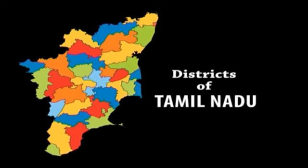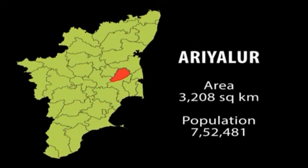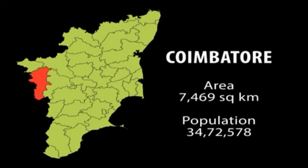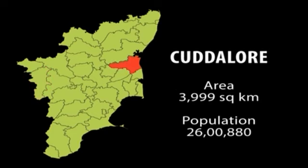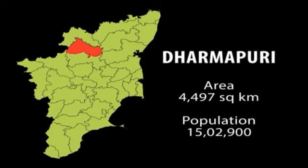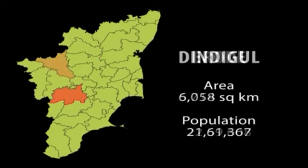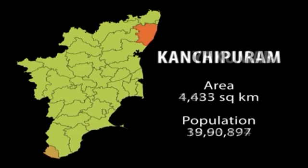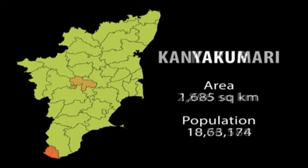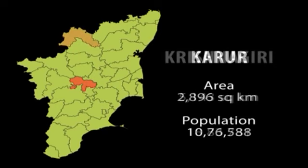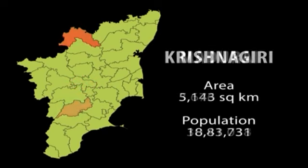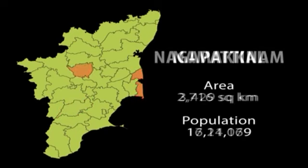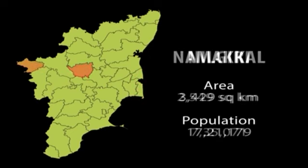The districts of the state include Ariyalur, Chennai, Coimbatore, Cuddalore, Dharmapuri, Dindigul, Erode, Kanchipuram, Kanyakumari, Karur, Krishnagiri, Nagapattinam, Namakkal, and others.